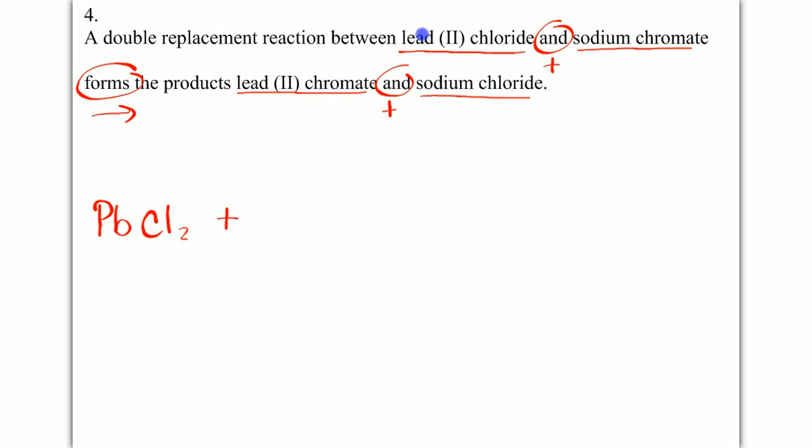And sodium which is plus one, chromate which is minus two, switch those charges. This forms lead two chromate: plus two and minus two cancel. And sodium which is plus one, chloride minus one, plus one and minus one cancel. And there's my final equation.